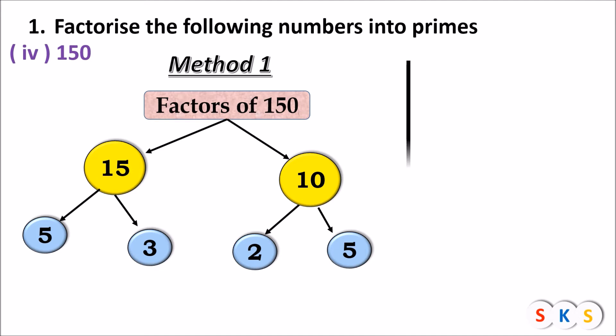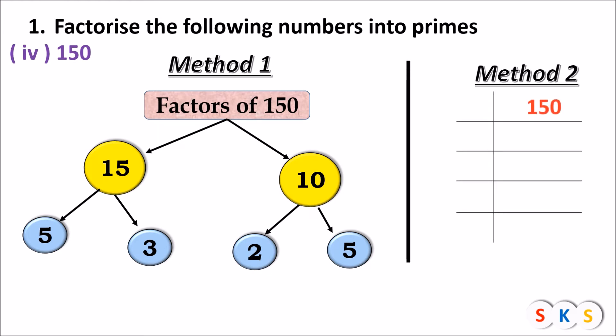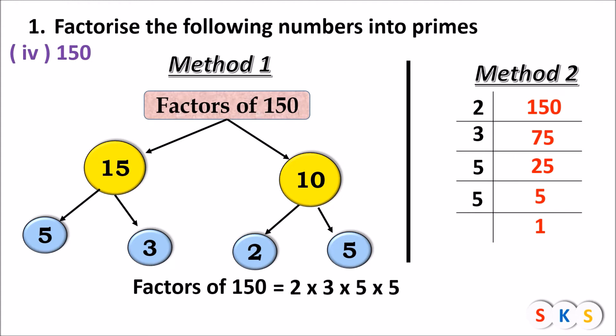Method 2 for 150: Divide by prime numbers. 150 ÷ 2 = 75. 75 is not divisible by 2, so try 3. Since 7 + 5 = 12, which is divisible by 3, divide: 75 ÷ 3 = 25. Divide 25 by 5: 25 ÷ 5 = 5. Divide 5 by 5: gives 1. So the prime factors of 150 = 2 × 3 × 5 × 5.